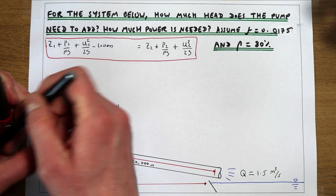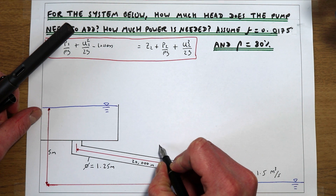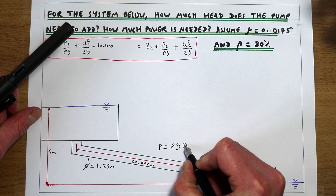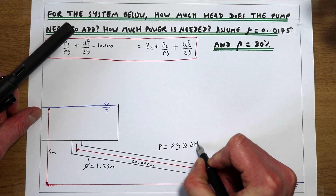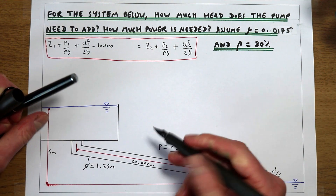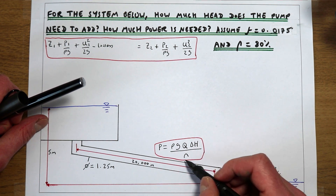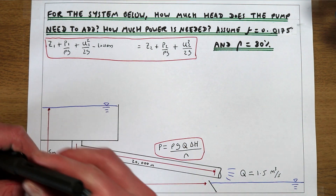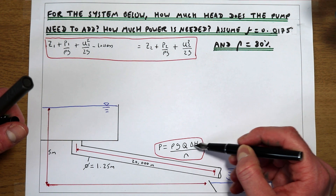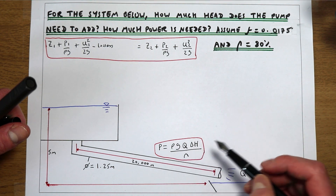The other thing we need to know is how much power a pump requires. The power that a pump requires is the density of water times gravity times the flow rate of the system, times the head that the pump is adding to the system, divided by the pump's efficiency. In this example the pump's efficiency is given as 80%. So firstly we need to work out how much energy in terms of pressure head the pump needs to add, and secondly how much power we need to provide to give that extra energy.